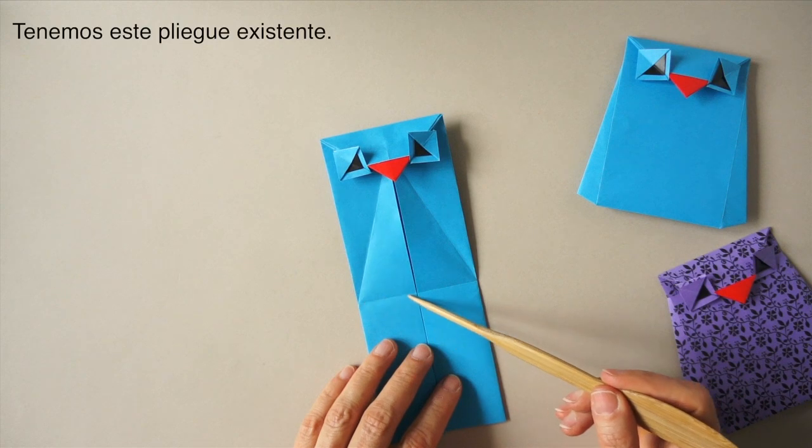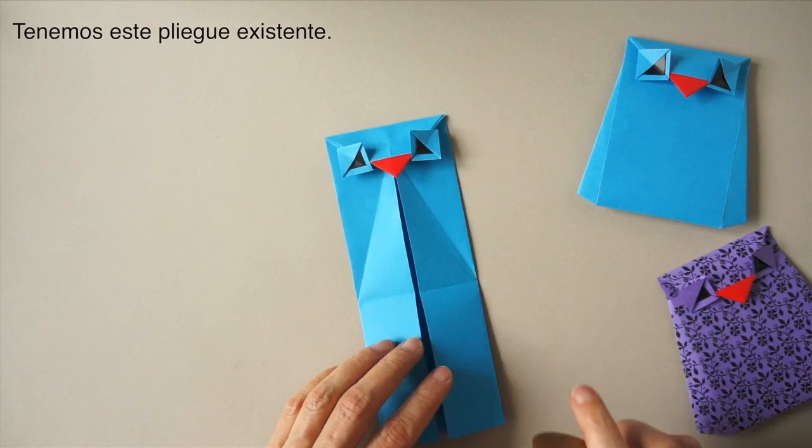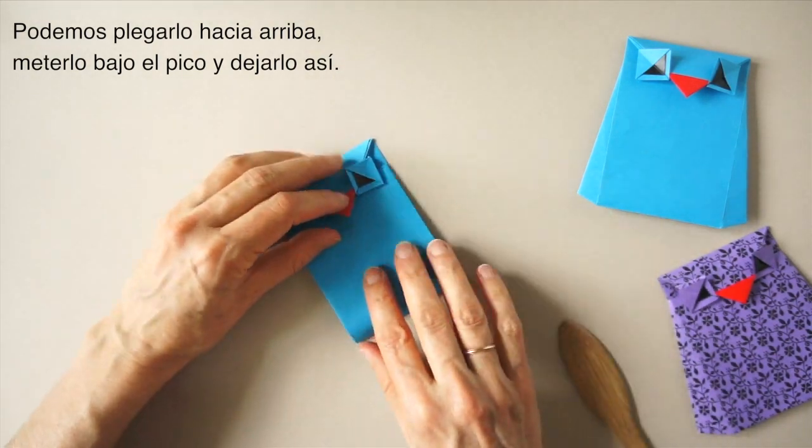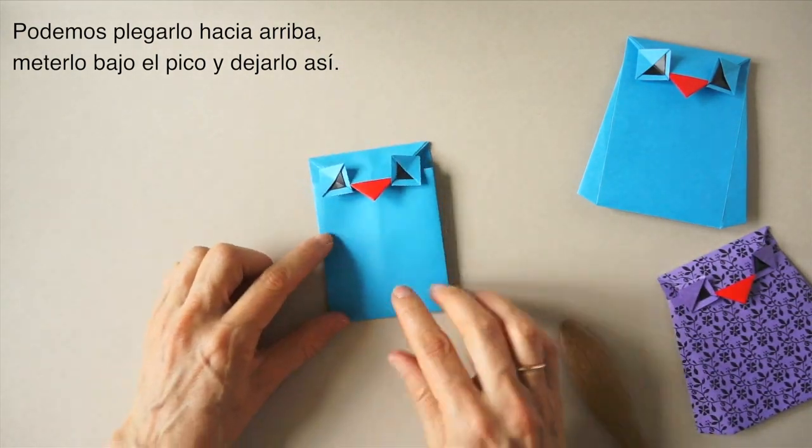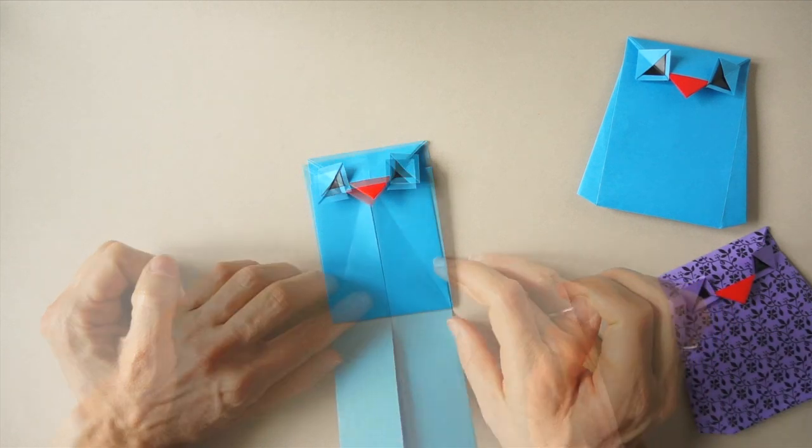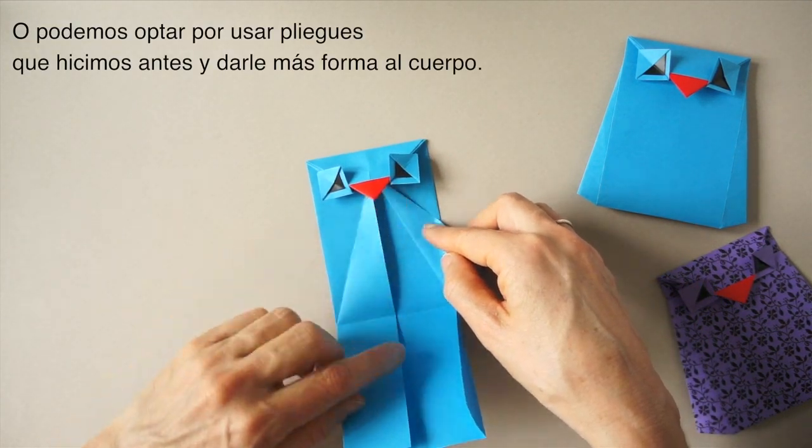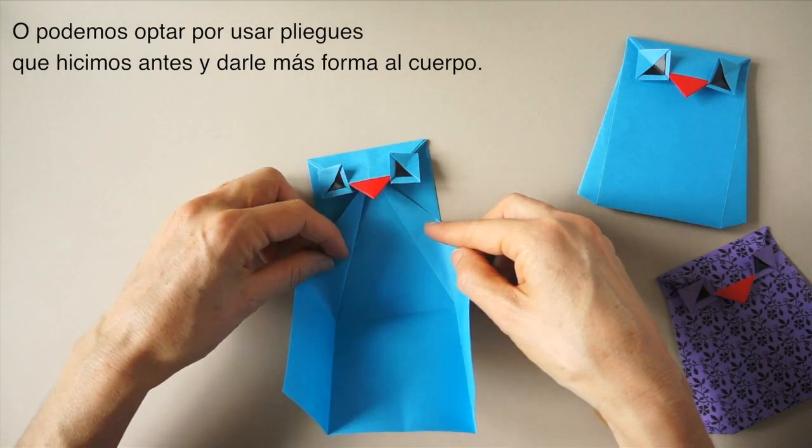We have this fold existing. We can choose to just fold it up, tuck it underneath and leave it like this. Or we can choose to use the previous folds and give the owl more body.